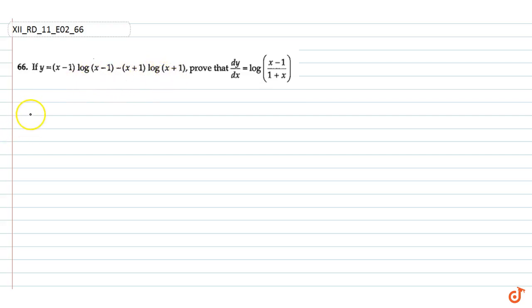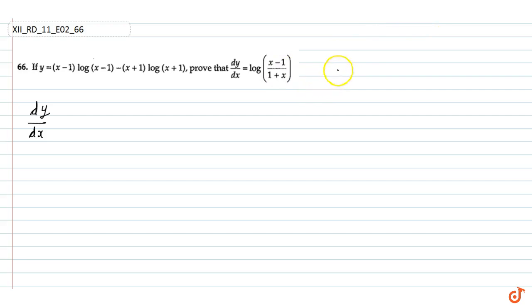So, dy by dx कैसे होगा? We know that in addition, differentiation में कोई effect नहीं पड़ता — हम दोनों functions को अलग-अलग differentiate करेंगे। और यह u into v की form में लिखा हुआ है। So, u into v का differentiation क्या होता है? u·v का differentiation: u dash v plus v dash u.